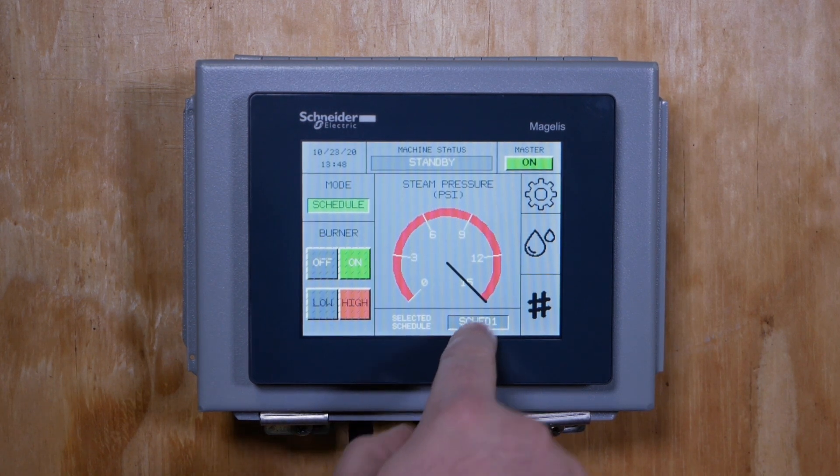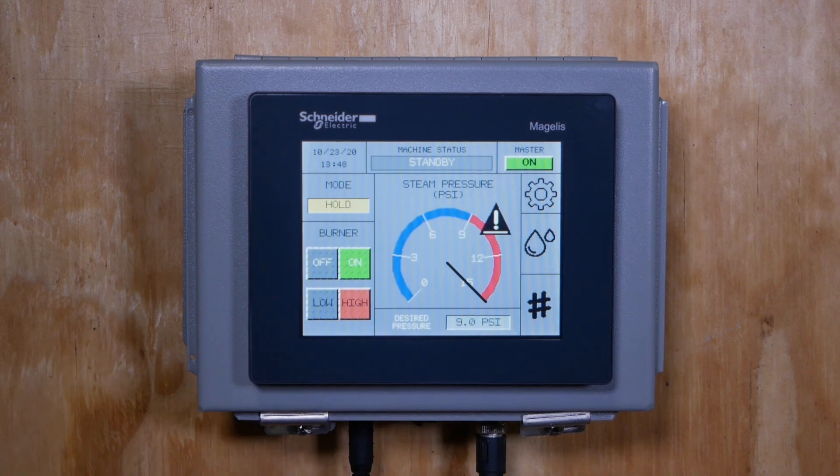Next is hold mode. In this mode, you manually turn the machine on and off with the master button and control the pressure with the master pressure setting.